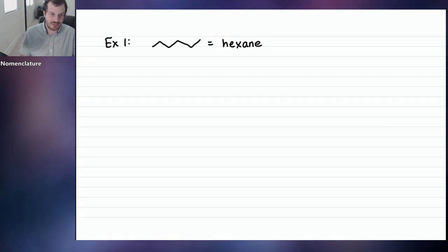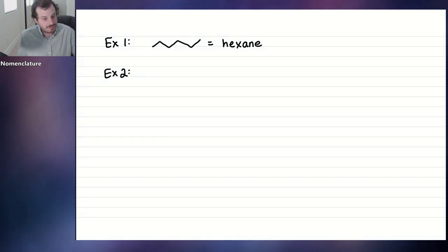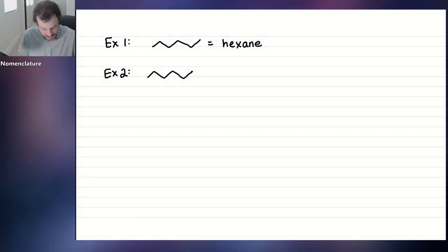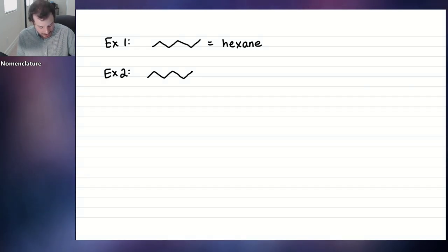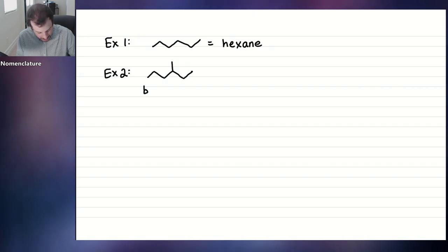This is easy, but it gets harder and more fun. Let's take a look at another example. I'm going to draw hexane again, but I'm going to add a carbon coming off of the hexane. This is what we call a branched alkane.